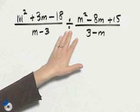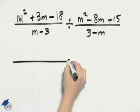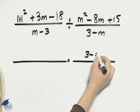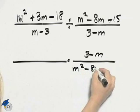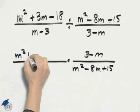The indicated operation is division, so we need to rewrite this as a multiplication problem. We will multiply by the reciprocal of the second fraction. The first fraction will remain as it is written.